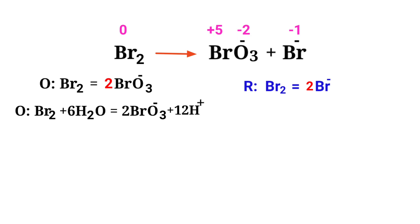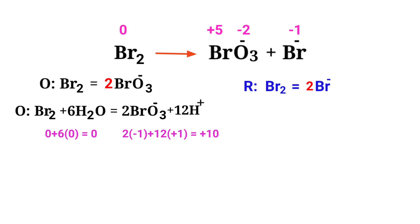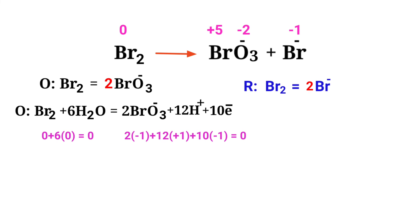For a redox reaction, the sum of charges should be equal on both sides. Check the oxidation half reaction — both sides are not equal. To make them equal, you add electrons; you cannot add protons. Adding 10 electrons to the right side makes both sides equal to 0. Now the charges are balanced in the oxidation half reaction.